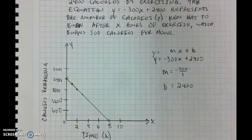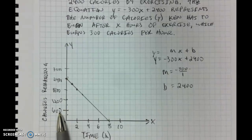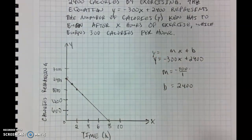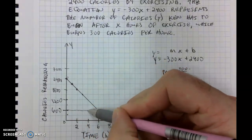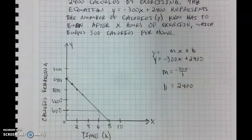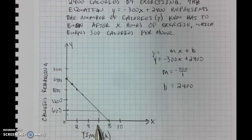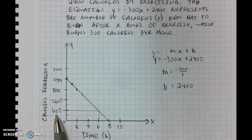Let's analyze our graph a little bit more. Let's say we wanted to figure out how many hours of exercise Ken would have remaining if he still had 600 calories left to burn. To do that, we make a rectangle using the x and y-axis as two sides. We start at 600 on the y-axis, trace over to our line, and then trace down. If Ken has 600 calories left to burn, we see that he has exercised for six hours, and has two more hours left to reach his goal.